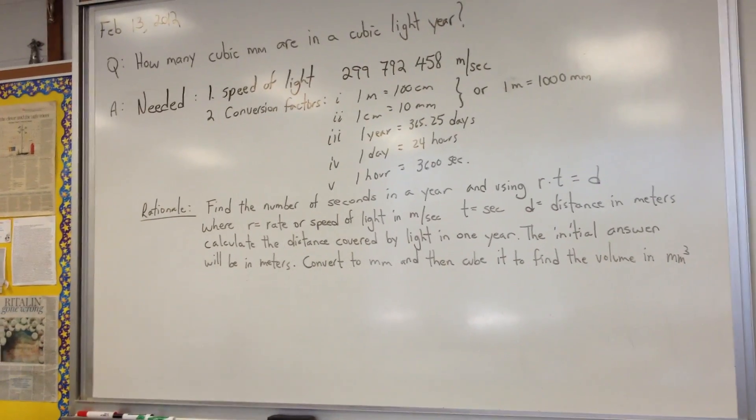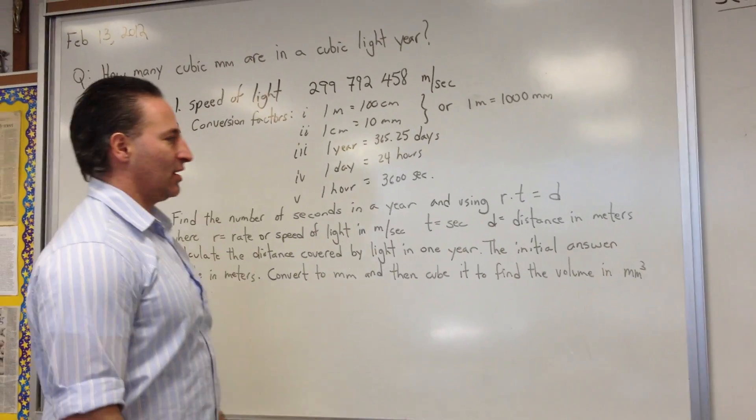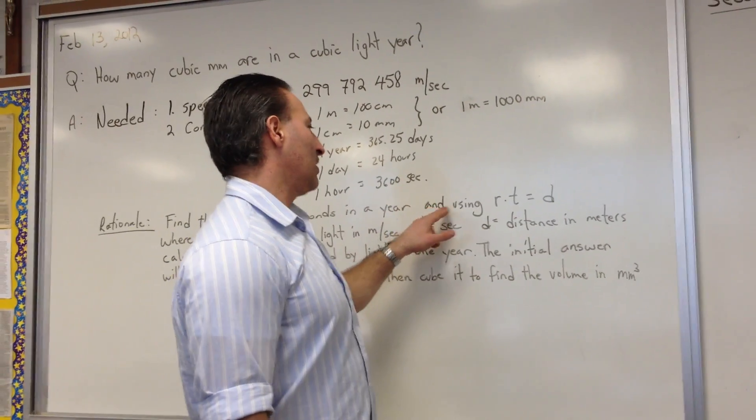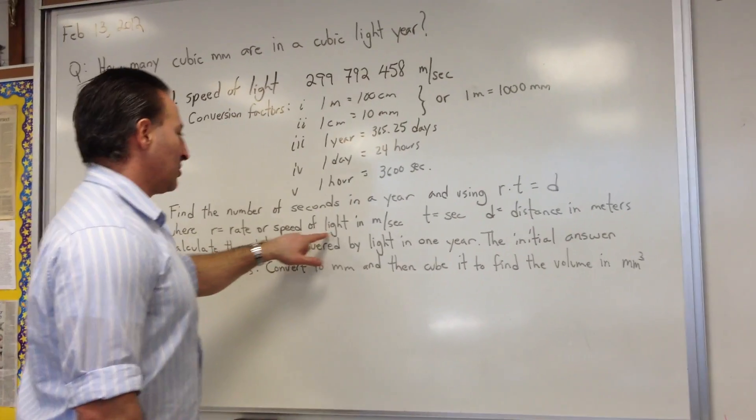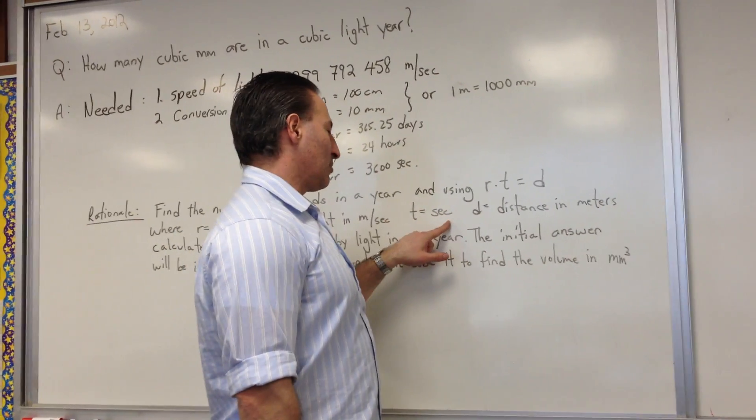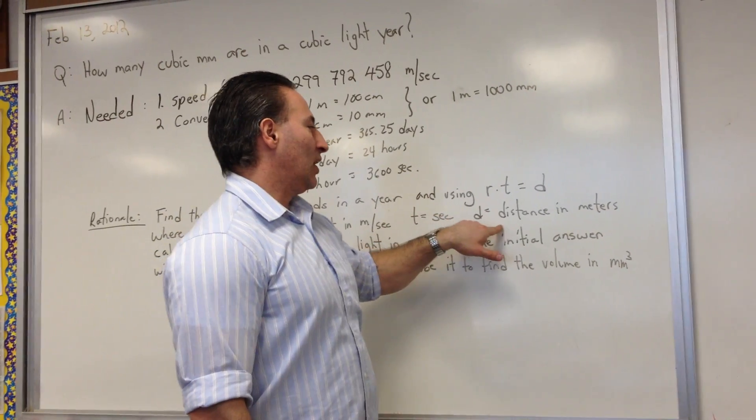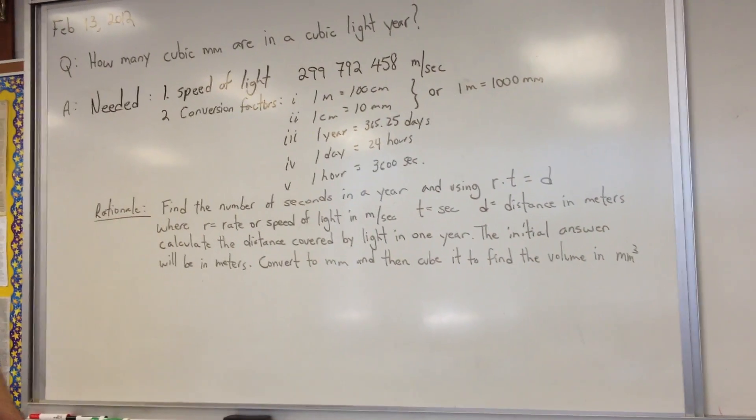The rationale to solve this problem, it's a multi-step problem. The first thing is to find the number of seconds in a year. And then using rate times time equals distance, where r equals the rate or the speed of light in meters per second, and t equals the number of seconds in a year. We find the distance covered by light in meters in the period of one year. And that is one light year.